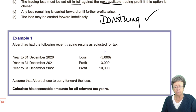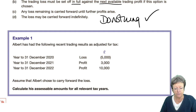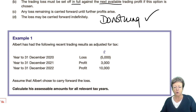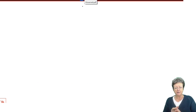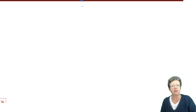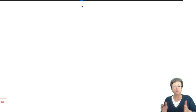Albert has the following trading results. In the year to 31st December 2020 he had a loss of £5,000, and then in the following two years he made a profit of £3,000 and a profit of £10,000. We are to assume that he's chosen to carry the loss forward, and you are to calculate his assessable amounts for all the relevant tax years. So let's have a look at this. There is a procedure, a pro forma — something that the examiner will have when they're marking your paper — and I'm going to set it up as I would expect you to present it in your exam so that it looks like the model answer. We always head the columns, and we have the years across the top.